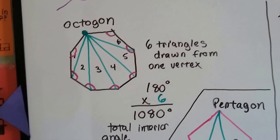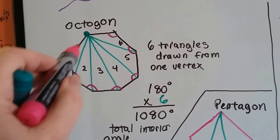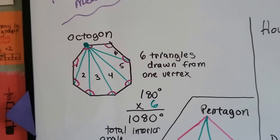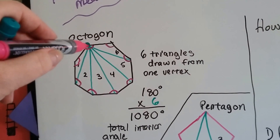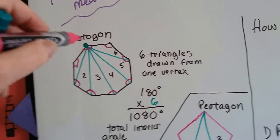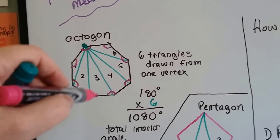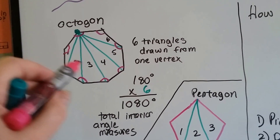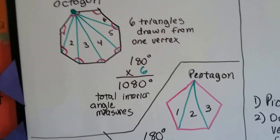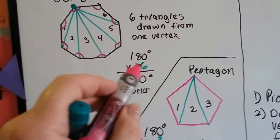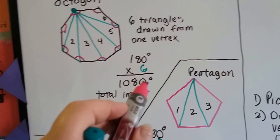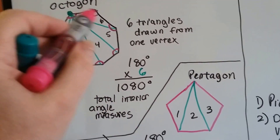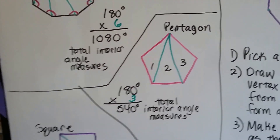That's what we're doing — totaling up the interior angle measures. How many interior angles did we have? We had 8, because it's an octagon: 1, 2, 3, 4, 5, 6, 7, 8 interior angle measures. And we were able to draw 6 triangles. We multiplied the 6 triangles by 180 degrees and got 1,080 — that's the sum of all 8 interior angle measures for an octagon.